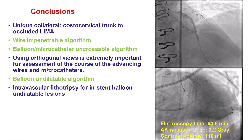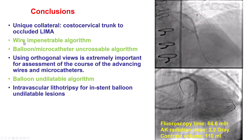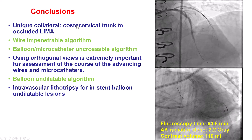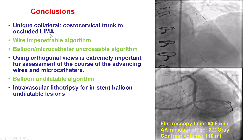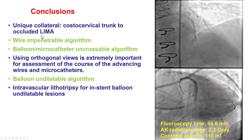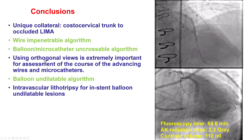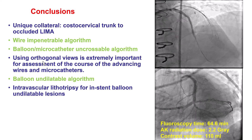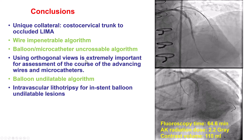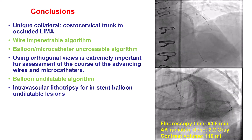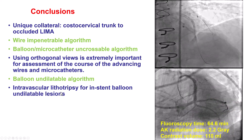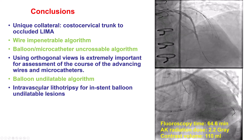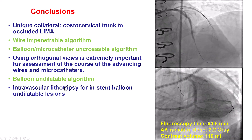Several challenges in this case were overcome with a systematic algorithmic approach: the wire-impenetrable algorithm, the balloon-microcatheter uncrossable algorithm, and the undilatable algorithm. The costocervical trunk was providing collateral to the LIMA — a very rare but unfavorable collateral for the retrograde approach. Of critical importance was using orthogonal views when advancing stiff guide wires within previously placed stents, to confirm the wire is staying within the stent. Finally, intravascular lithotripsy proved to be a convenient, easy-to-use, and now go-to method for in-stent undilatable lesions, successfully expanding the LAD.